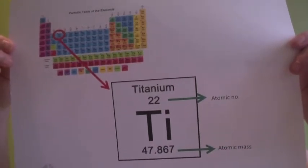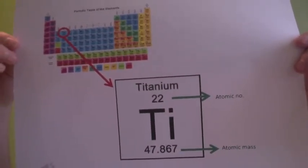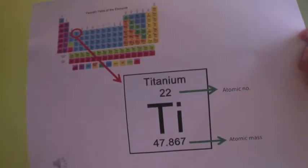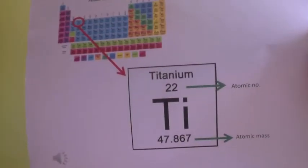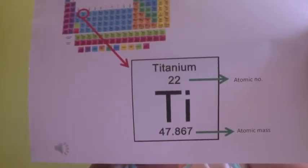Titanium dioxide has an atomic number of 22, an atomic mass of 47.9 grams, forming the chemical formula TiO2.